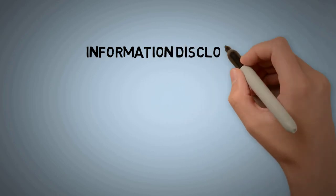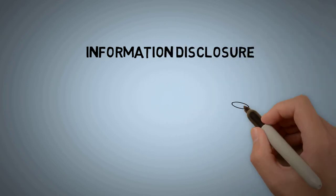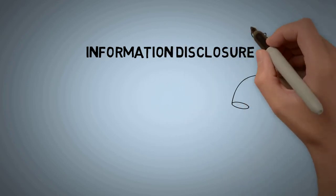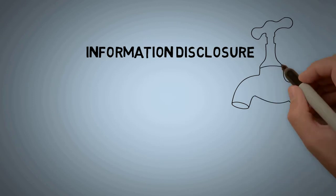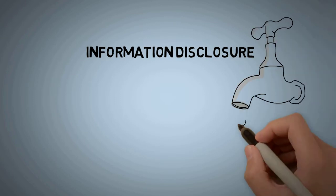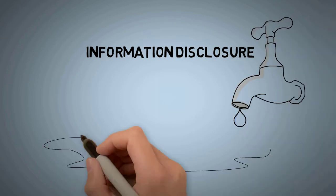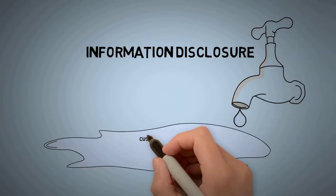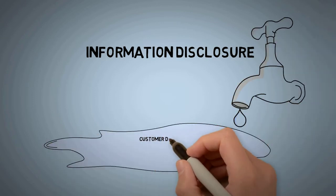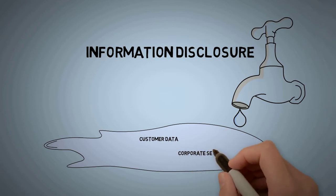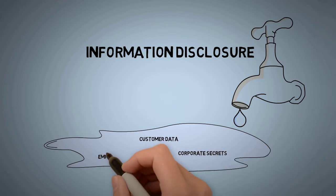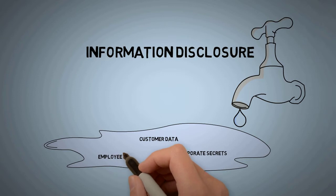Information disclosure is the exposure of private, confidential, or controlled data. Data leakage or data loss are common forms of information disclosure, although there are many other forms, all of which violate the quality attribute of confidentiality.